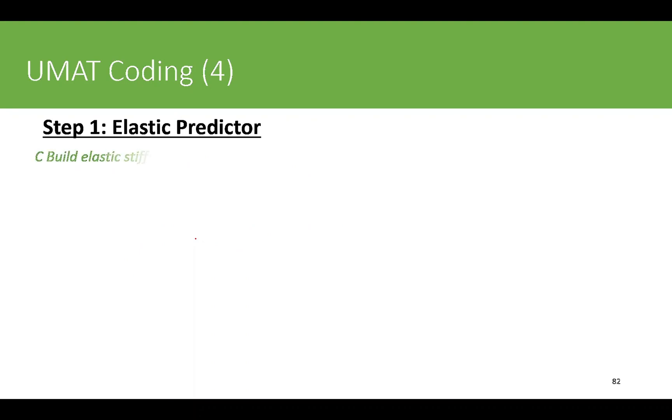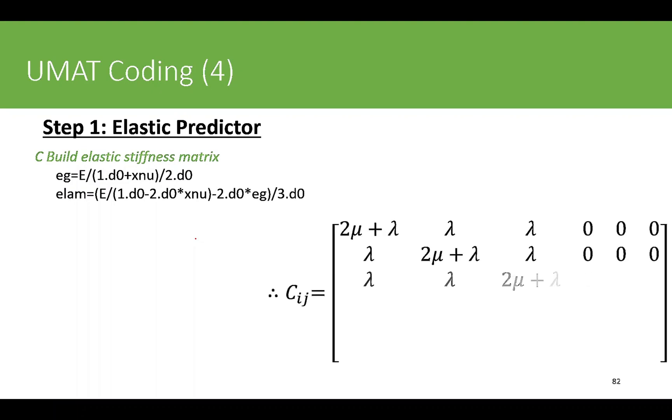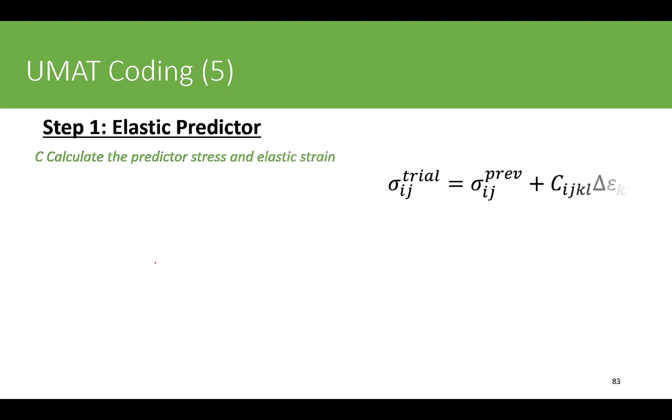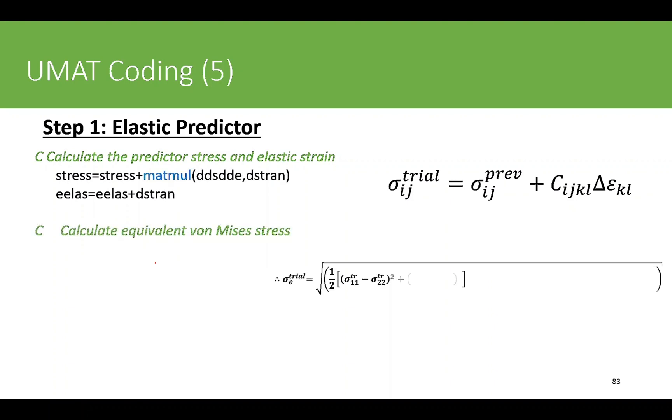Next is the predictor step. In this case we compute the elasticity matrix - mu and lambda - and then based on this relationship we define the elasticity tensor or stiffness tensor. Then we calculate the predicted stress and elastic strains using this relationship. We first compute the trial stress tensor and then compute the equivalent trial stress value, which is a von Mises stress in this case.